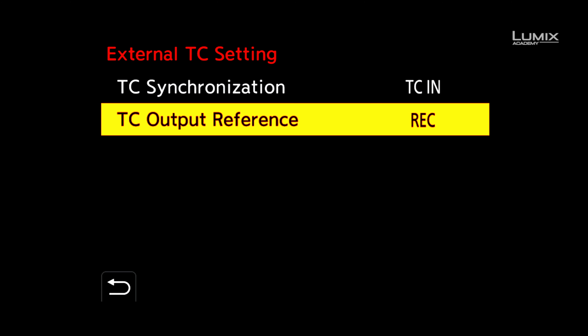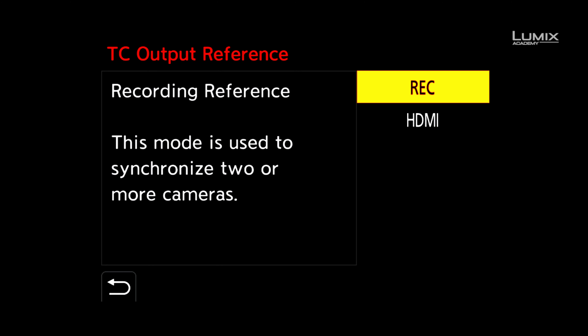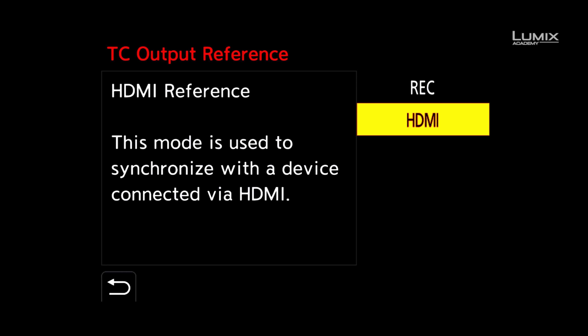The final option is to use timecode output reference, which allows you to choose between recording reference — which is the option you'll use in a multicam setting — or HDMI reference, which is used when you simply want to record externally via HDMI whilst retaining the sync.